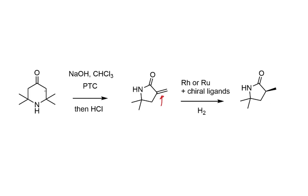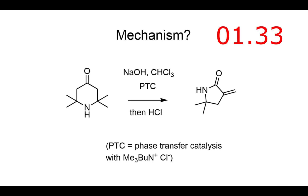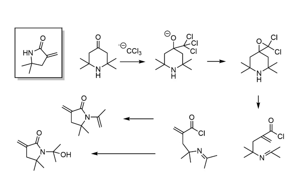The lactam was made from a tetrasubstituted piperidone — quite an interesting reaction. The combination of sodium hydroxide and chloroform generates trichloromethyl anions in solution, which add into the carbonyl to give an oxyanion intermediate. This snaps shut with ejection of a chloride anion to form a geminal dichloro epoxide. The nitrogen lone pair is then set up to fragment the ring: it pushes its electrons in, one epoxide bond breaks, another chloride is ejected, and an acid chloride intermediate is generated.